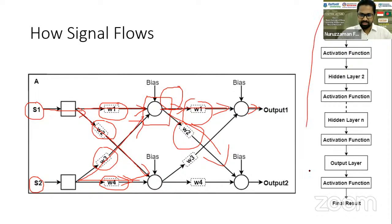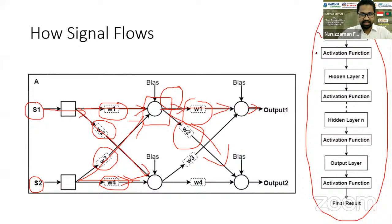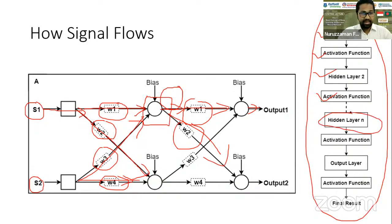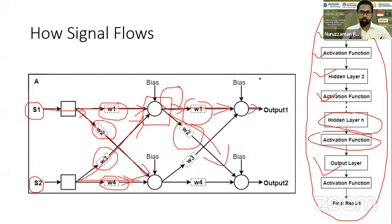For ease of understanding, a block diagram shows the flow: input layer, hidden layer, activation function — then the processed signal goes to the second hidden layer, then activation function again. In this way, it crosses n hidden layers and activation functions. Finally, we get the output. That's the flow of the signal through the neural network.